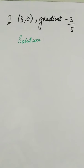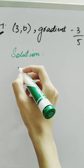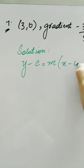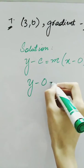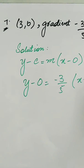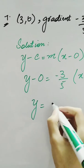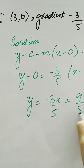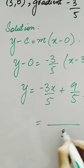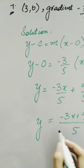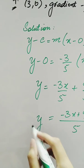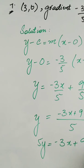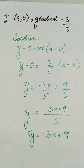We have another question in which the coordinates are given as (3, 0) and gradient is -3/5. Using y - y₁ = m(x - x₁): y - 0 = -3/5 · (x - 3), giving y = -3x/5 + 9/5. Taking LCM, we get -3x + 9 in the numerator. Multiplying through by 5: 5y = -3x + 9. This is our equation.